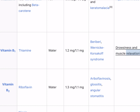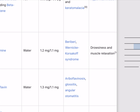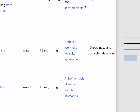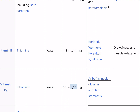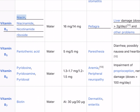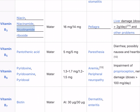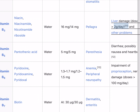Pork, oatmeal, brown rice, vegetables, potatoes, liver, and eggs are sources of B1. Vitamin B2 (riboflavin) is water-soluble; 1.3 mg/1.1 mg recommended. Deficiency causes ariboflavinosis, glossitis, and angular stomatitis; sources include dairy products, bananas, green beans, and asparagus. Vitamin B3 (niacin, niacinamide, nicotinamide riboside) is water-soluble; 16 mg/14 mg recommended. Deficiency causes pellagra and liver damage at doses over 2g/day.